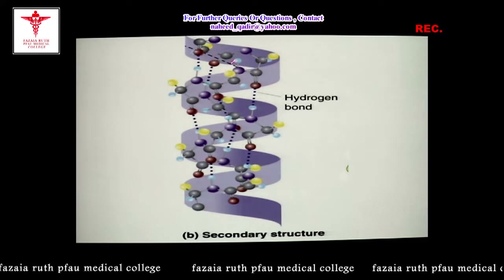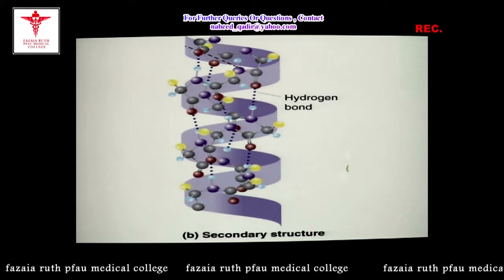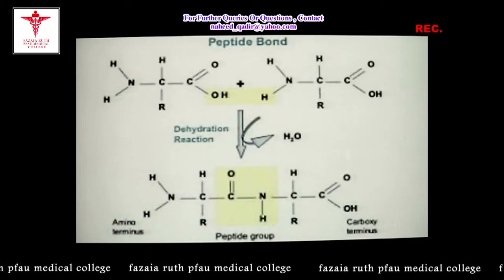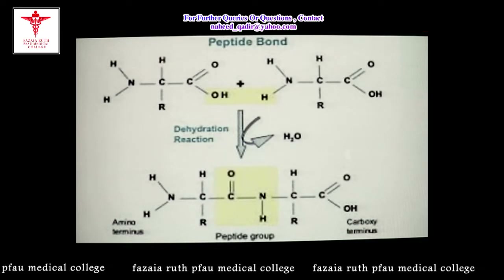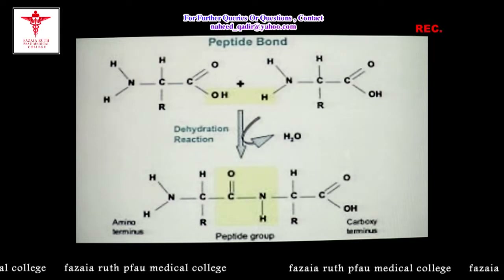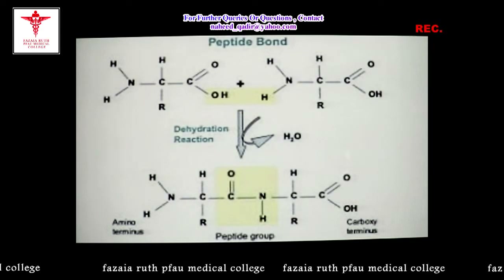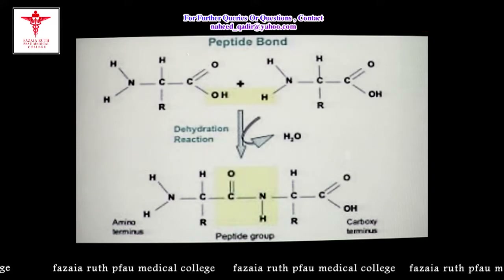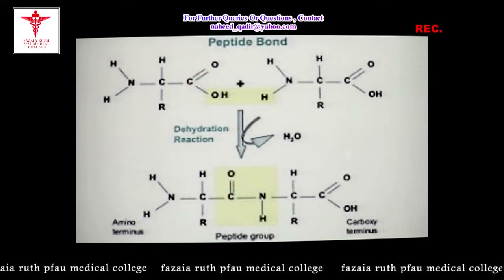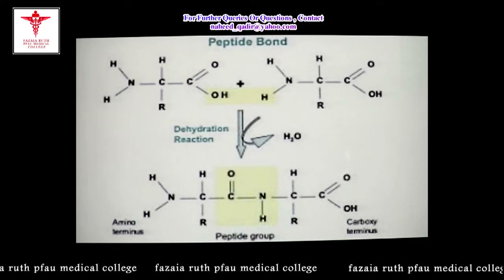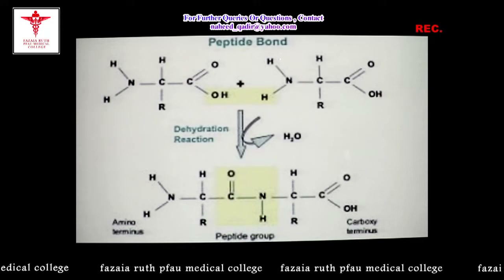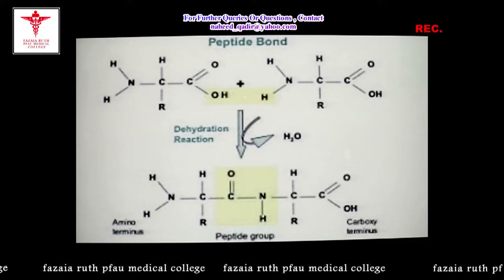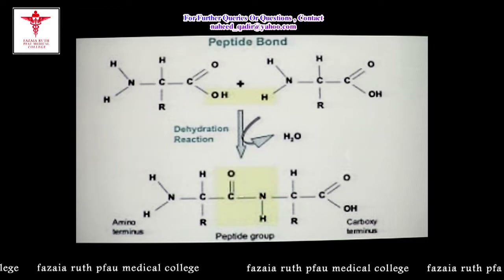You should understand what a peptide bond is, because without understanding the peptide bond we cannot understand how the backbone of the secondary structure is stabilized by hydrogen bonding. The peptide bond is formed between the carboxyl group of one amino acid and the amino group of the second amino acid, and one water molecule is eliminated — it is simply a dehydration reaction.